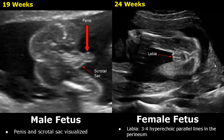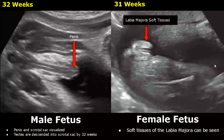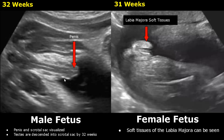Usually by 32 weeks in a male fetus, the testes will descend into the scrotal sac and they can be visualized. In this image, however, we do not see the scrotal sac, but we can see the male genitalia.